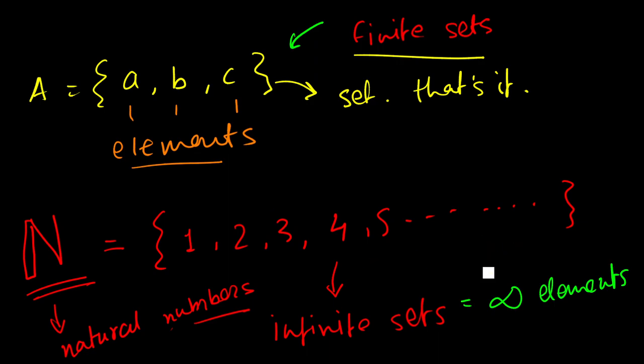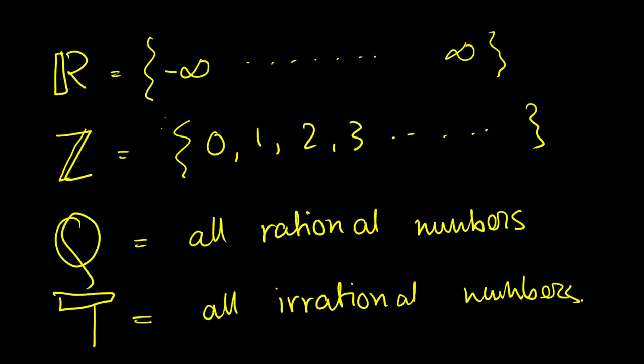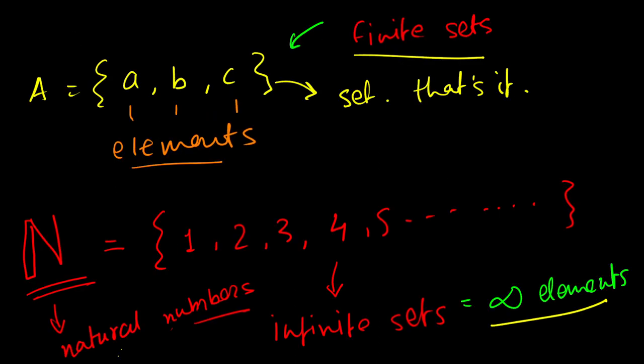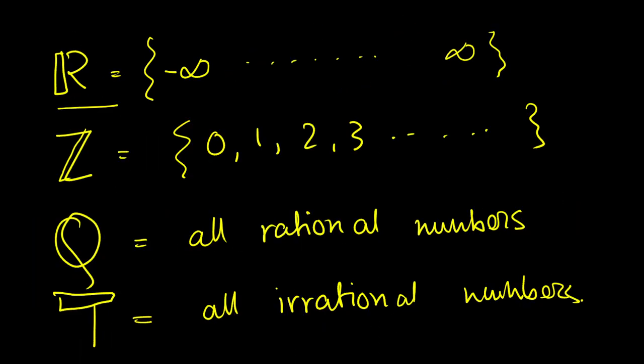And then we have finite sets which have a limited amount of elements. We also have infinite sets which have infinite amount of elements. And we also have empty sets which have nothing, like literally nothing, that can be defined using a Greek letter called phi. And we have some common sets like the set of natural numbers, the set of real numbers, whole numbers, rational numbers, and irrational numbers.